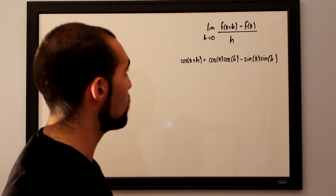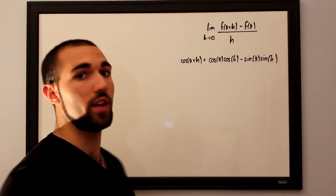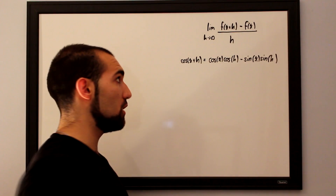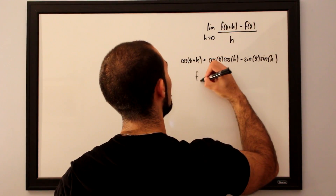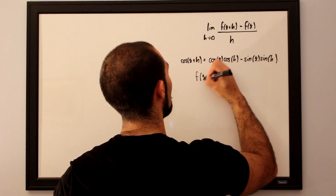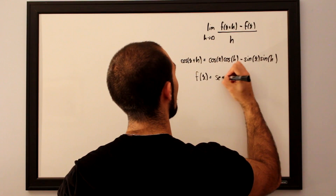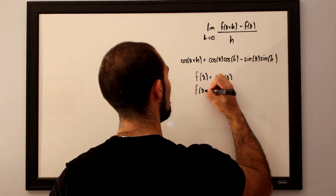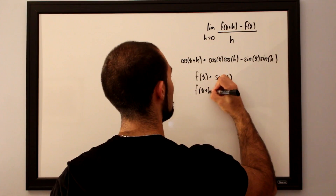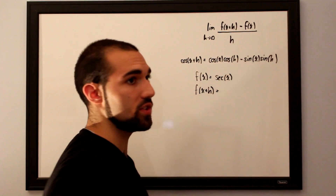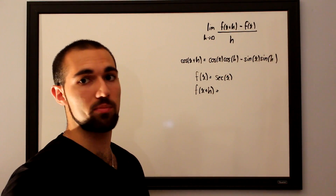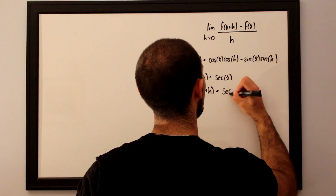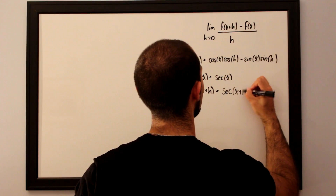We want to define our terms, which are f of x plus h. We already know our f of x is simply going to be secant of x, so f of x equals secant of x. And our f of x plus h is found by taking our initial function and wherever you see x, substituting it with x plus h, so this becomes secant of x plus h.